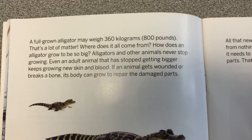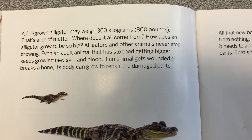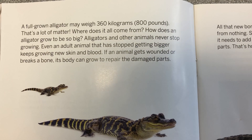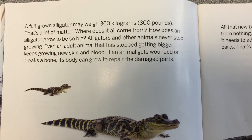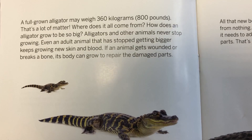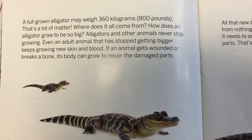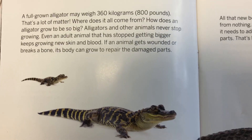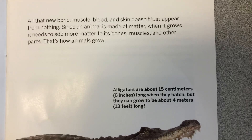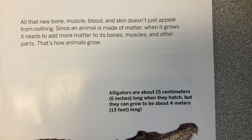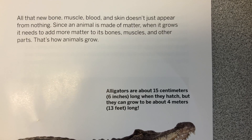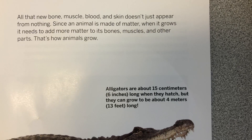A full-grown alligator may weigh 360 kilograms, or 800 pounds. That's a lot of matter. Where does it all come from? How does an alligator grow to be so big? Alligators and other animals never stop growing. Even an adult animal that has stopped getting bigger keeps growing new skin and blood. If an animal gets wounded or breaks a bone, it can grow to repair the damaged parts. All that new bone, muscle, blood, and skin doesn't just appear from nothing. Since an animal is made of matter, when it grows, it needs to add more matter to its bones, muscles, and other parts. That's how animals grow.